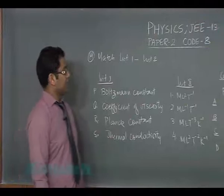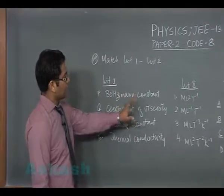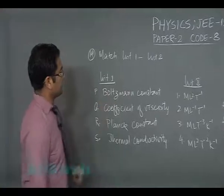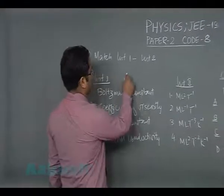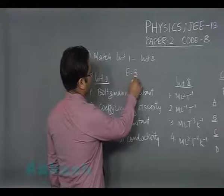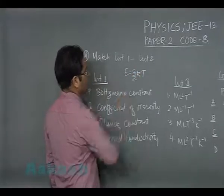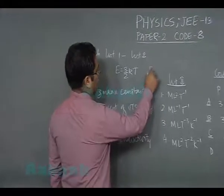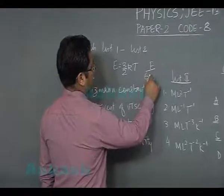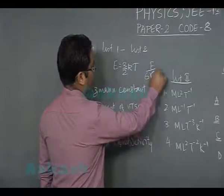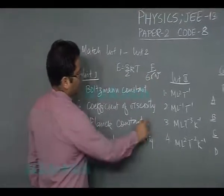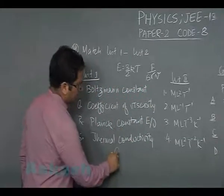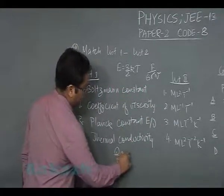Alright, question number 19. We got to list out, and this is purely for dimension. Boltzmann's constant could be found out by energy equals 3 by 2 kT. Coefficient of viscosity could be found by F by 6πrV. Planck's constant could be found by E upon frequency, and thermal conductivity rate of heat flow by KA delta theta by X.